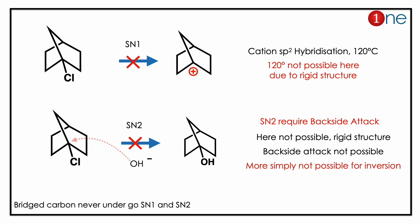If you look at the SN2 reaction, the backside nucleophilic attack is required. Here, that is not possible because of the strain, crowding, and the rigid structure of the norbornyl system.